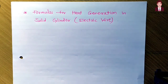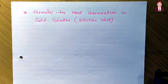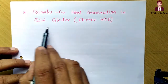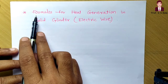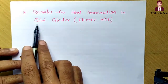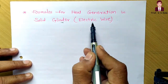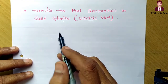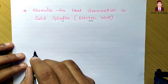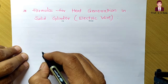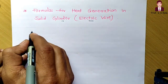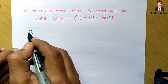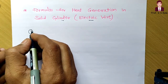We are going to see the various formulas required for solving a problem on a solid cylinder. A solid cylinder is nothing but an electric wire, so an electric wire can be considered as a heat generation system with a solid cylinder. For solving the problem, we require many formulas that you must know.